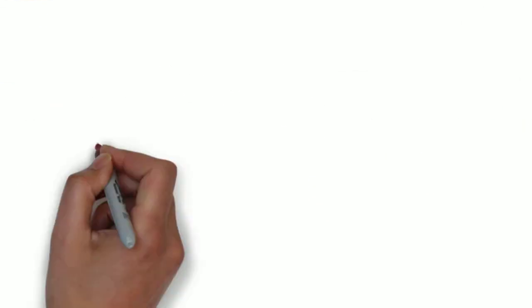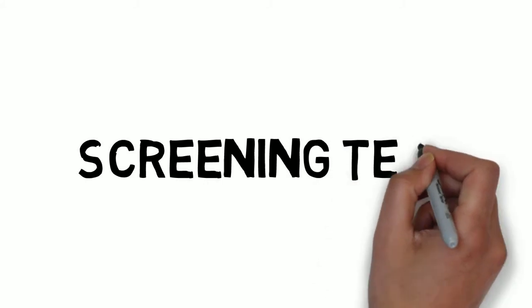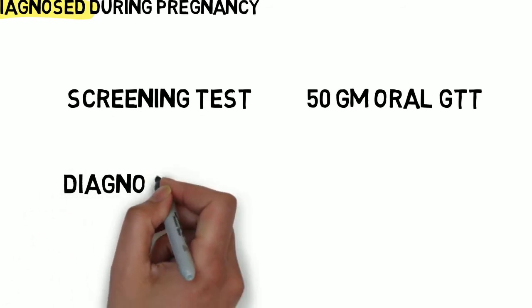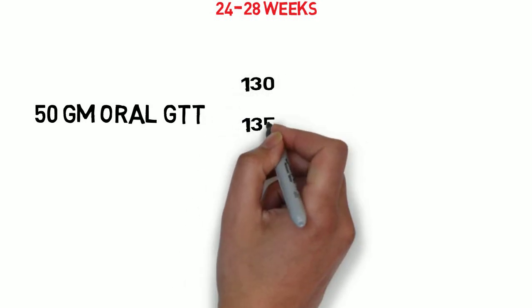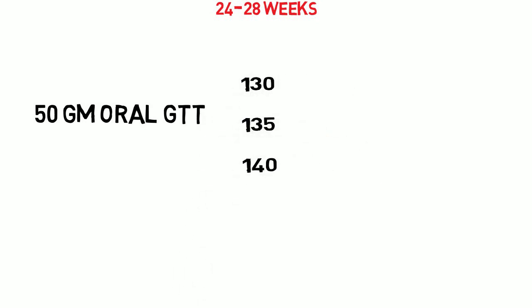The most common screen is a 50-gram, one-hour, oral glucose tolerance test. This is a screen. It is judged by its ability to predict whether the diagnostic, as opposed to screening, test is going to be positive. Some institutions use 140 as the cutoff, some 135, and some 130. As you can guess, more people will flunk the 130 cutoff, making it less specific, but more sensitive. You'll catch more gestational diabetes, but you'll have more patients being sent for the three-hour diagnostic test.